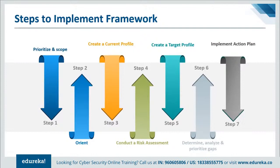The last step is to implement the action plan. The organization determines which actions to take to address the gaps identified in the previous step and adjusts its current cybersecurity practices to achieve the target profile. For further guidance, the framework identifies examples and informative references regarding categories and subcategories, but organizations should determine which standards, guidelines, and practices — including sector-specific ones — work best for their needs. An organization repeats the steps as needed to continuously assess and improve its cybersecurity.